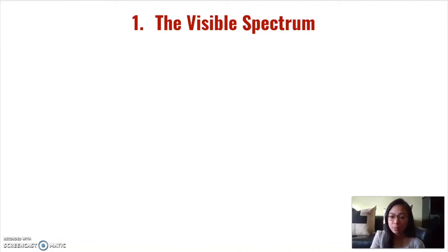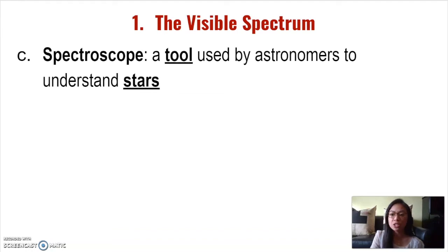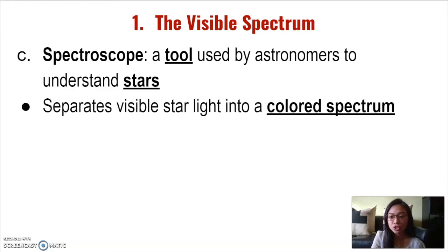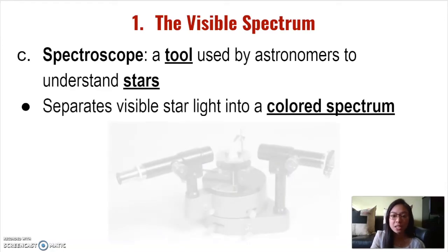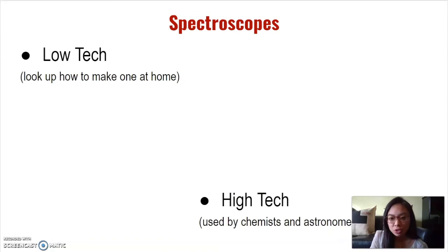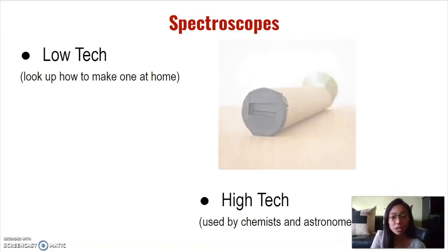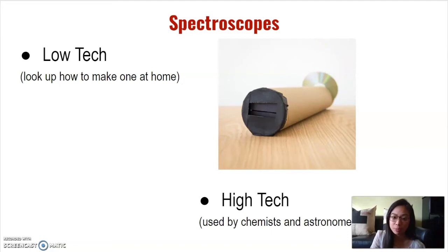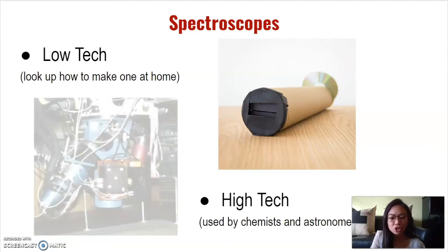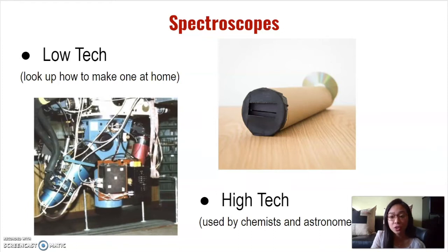Now that we're familiar with the light spectrum, let's talk about the spectroscope. The spectroscope is a tool used by astronomers to understand stars. It separates visible starlight into a colored spectrum. Spectroscopes come in different versions and complexities — you can even build your own low-tech version at home using everyday items like a paper towel, a CD, cardstock, and some tape. At the other end are super high-tech spectroscopes used by professionals like chemists or astronomers.